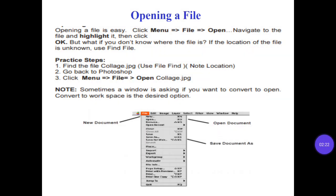Practice steps. Number 1: find the file College.jpg — use the file explorer to find its location. Number 2: go back to Photoshop. Number 3: click menu, then File, then Open College.jpg. Note: sometimes a window asks if you want to convert. Convert to Workspace is the recommended option.